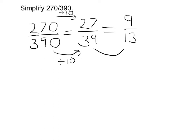There aren't any other factors that 9 and 13 share, so I know that I have simplified the fraction. 270 divided by 390 simplified is 9 thirteenths.